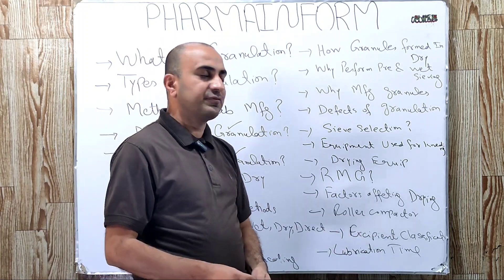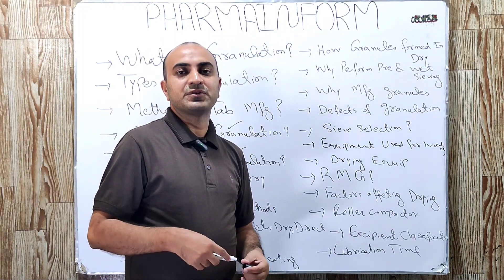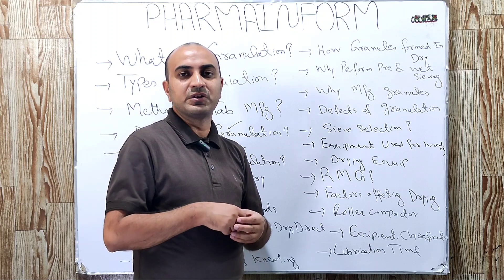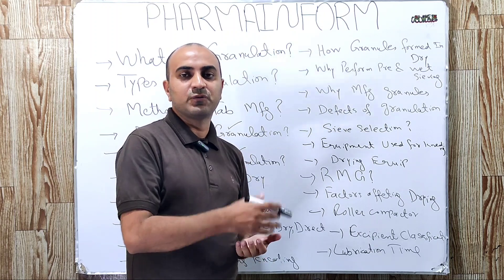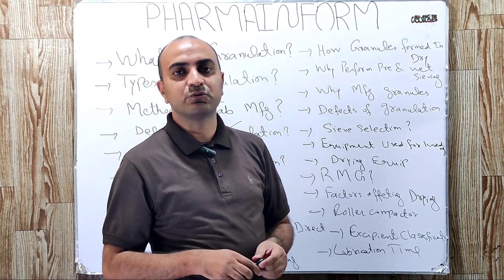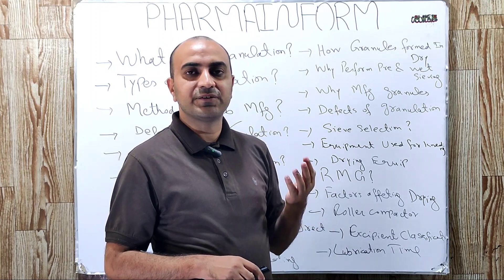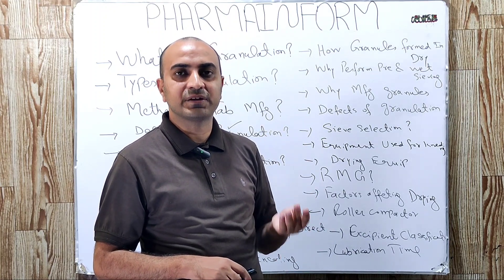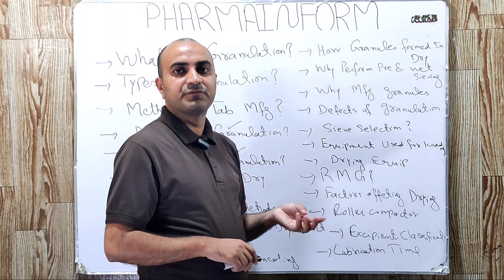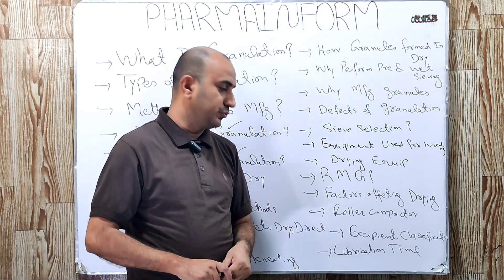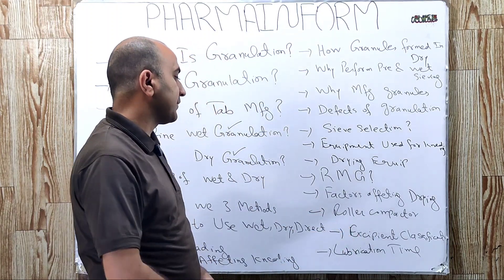What is the excipient classification or which excipients are used during granulation? Usually following excipients are used: diluents, disintegrants, binders, lubricants, glidants, colorants, flavorants. These are the commonly used classification of the excipients.